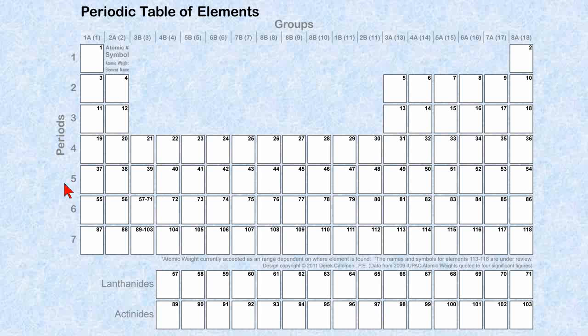So period 1 is row 1, period 5 is row 5. And we'll explain the significance of periods as we move along.